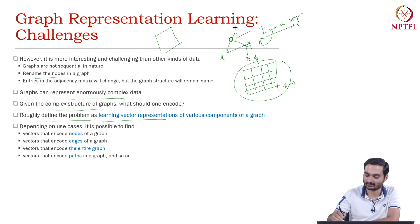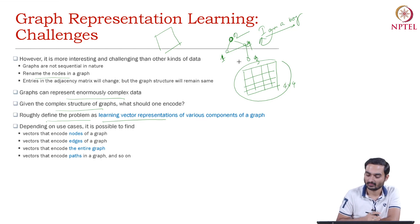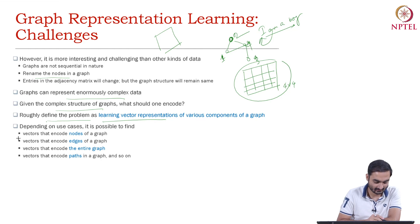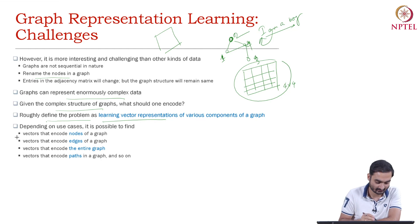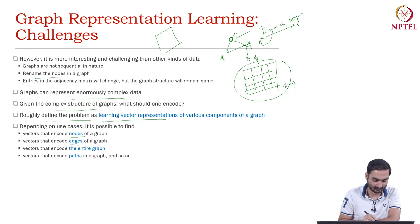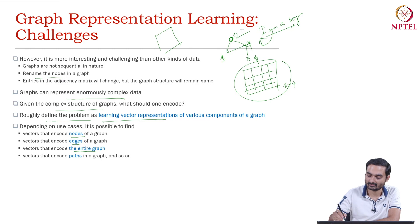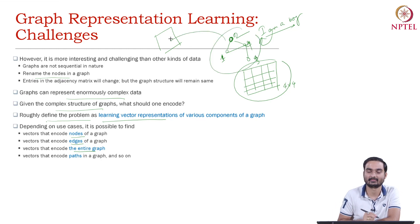We will discuss how we address these problems in the later part. When we say that we are embedding a graph to an embedding space, we are essentially talking about either embedding a node, embedding edges, or even embedding an entire graph by a single vector. We can also think of embedding a sub-graph or community and so on.